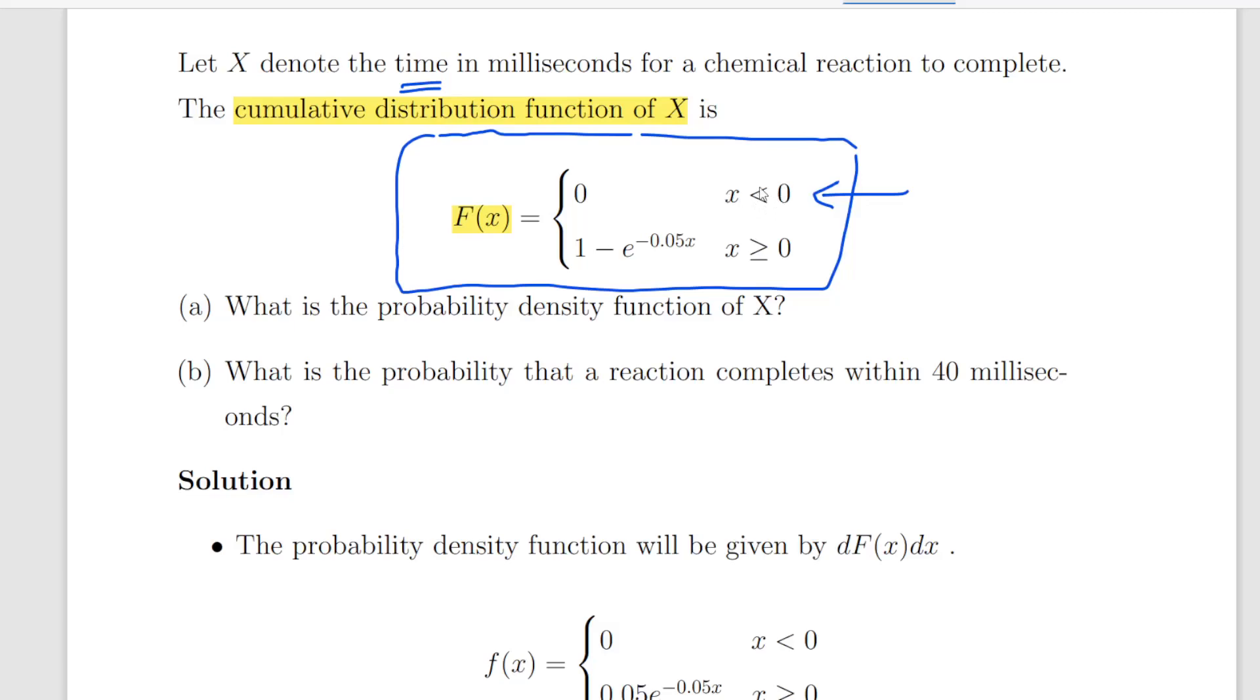So it's just how to properly specify cumulative distribution function is what I'm getting at. So this is the key line here: 1 minus e to the minus 0.05x where x is greater than or equal to 0. X is a positive number or non-negative number at least.